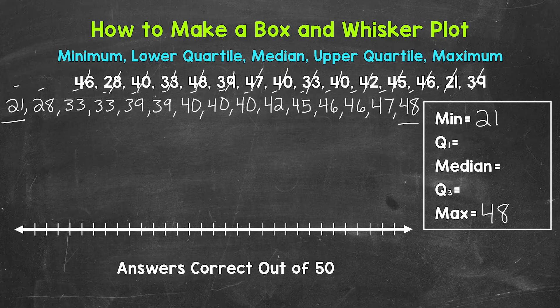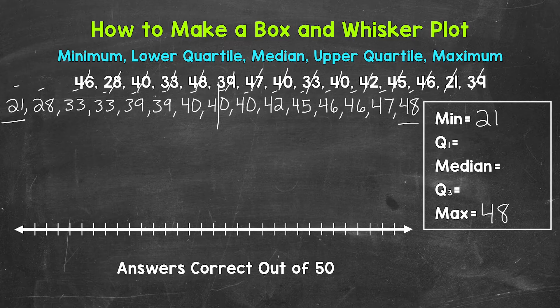Next, let's find the median — the middle point of the data, the 50th percentile. Since we have 15 numbers in the data set, we will have seven numbers on each side, and the number in the middle will be the median. So 40 is right in the middle. The median is 40.